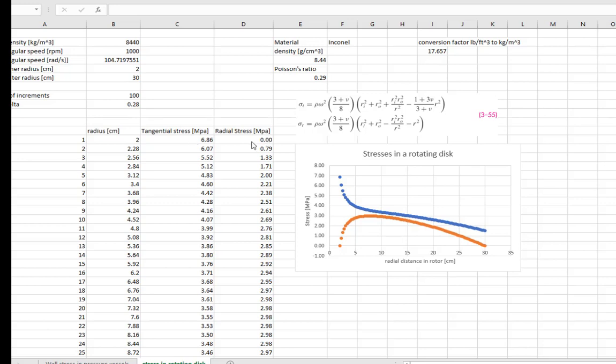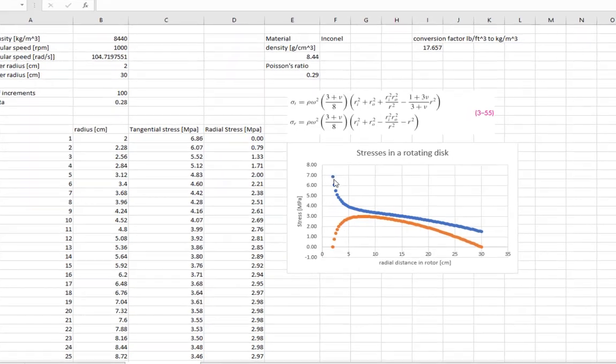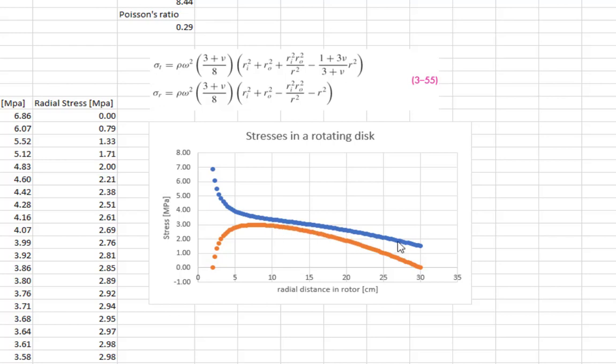The radial stress, of course, since it points in the direction of the radius, has to be zero at the free inner radius right there, and it has to fall back to zero at the outer radius. Well, a plot of the tangential and radial stress, tangential stress shown in blue here, radial stress starts at zero, rises, and drops to zero at the outer boundary.